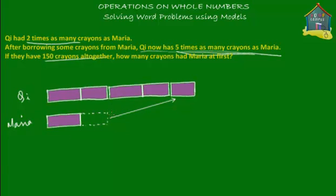Now, we have that they have 150 crayons altogether — so the total of all blocks is equal to 150 crayons.